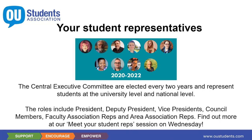We have student representatives who are elected every two years. They form either the Central Executive Committee, or we have Board of Trustees reps that are elected as well. The Central Executive Committee are elected every two years and they represent the university at every level and at national level as well. The roles include president, deputy president, several vice presidents, a council member, several faculty association representatives, and also area association representatives.